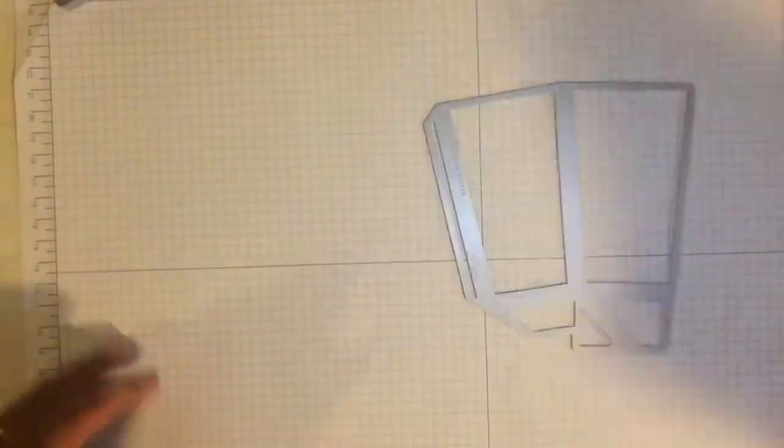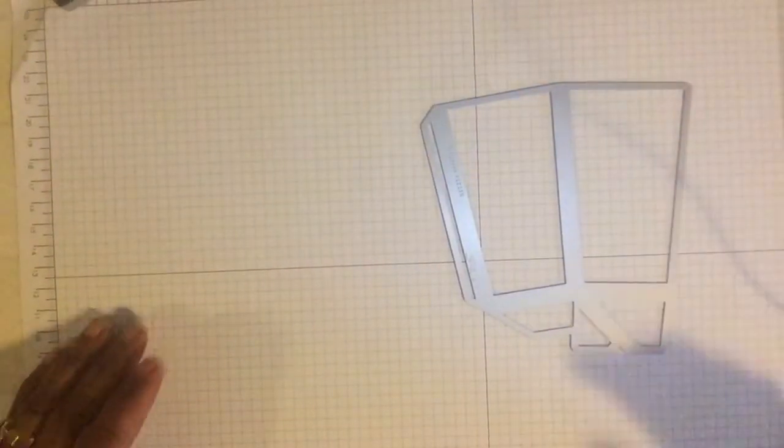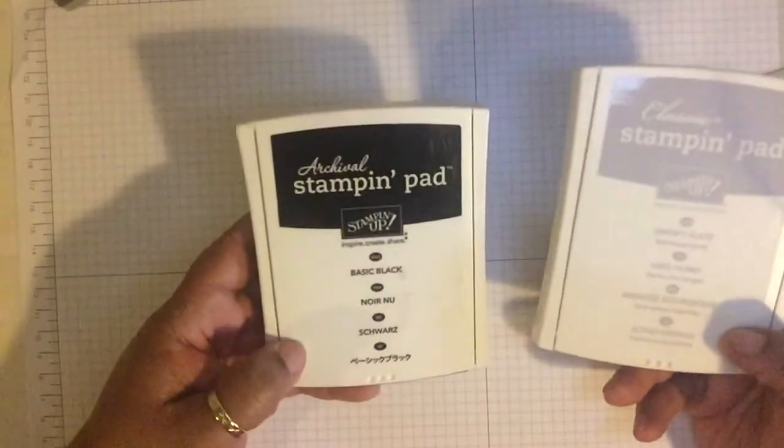I'll need my big shot for this as well. Inks that I'm going to use today are Smoky Slate and Basic Black. I'm going to be using my aqua painter for the image. The paper that I'm going to be using is from the new Halloween DSP called, I think it's Halloween Nights.